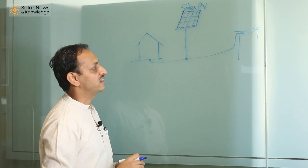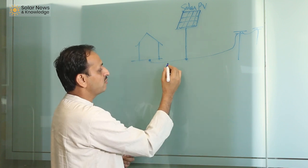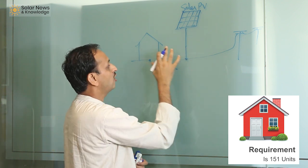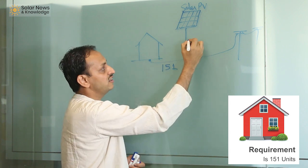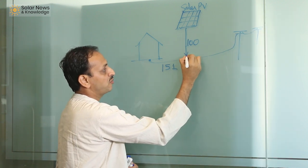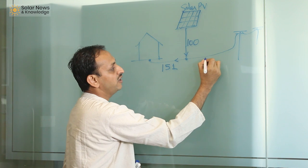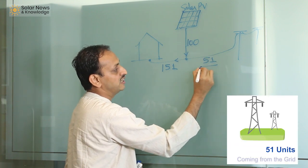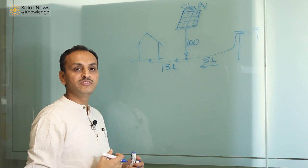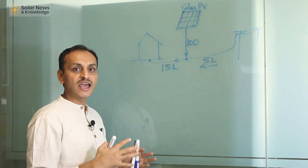Now, suppose your total consumption is 151 units, and you are generating about 100 units using solar. Solar is supplying 100 units, but you are consuming 151 units, so the remaining 51 units are going to come from the grid. That is how your grid-connected system works, and in the net metering case you are going to get a net of 51 units of electricity from the grid.